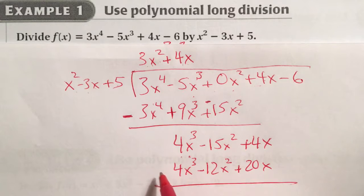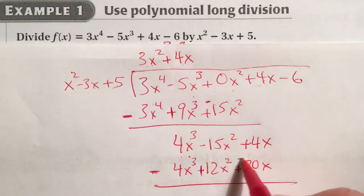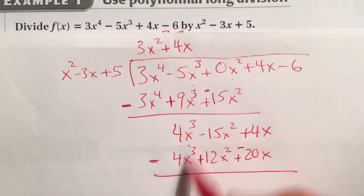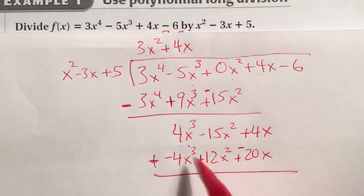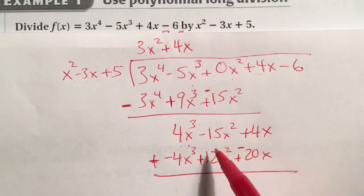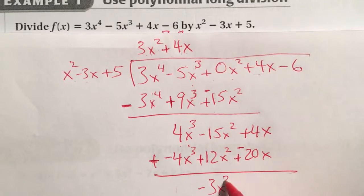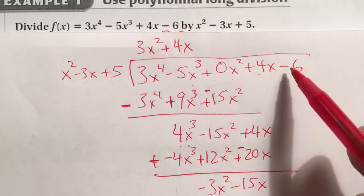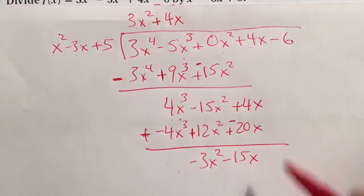Again, you're going to subtract. When you subtract, change all of the signs for all of the terms. That becomes a negative, there's a positive, that's a negative. Then subtract or add vertically. We're adding negative numbers here, that's 0. This is negative 3x^2. This becomes negative 15x. Then bring down the last term all the way down, negative 6.